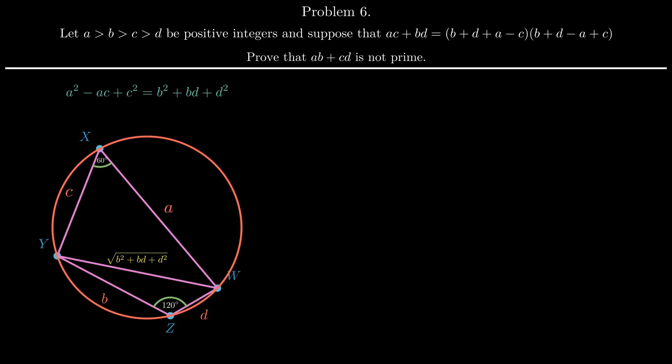Using the strong version of the theorem for the diagonal YW, we get that YW squared is ab plus cd times ad plus bc over ac plus bd.